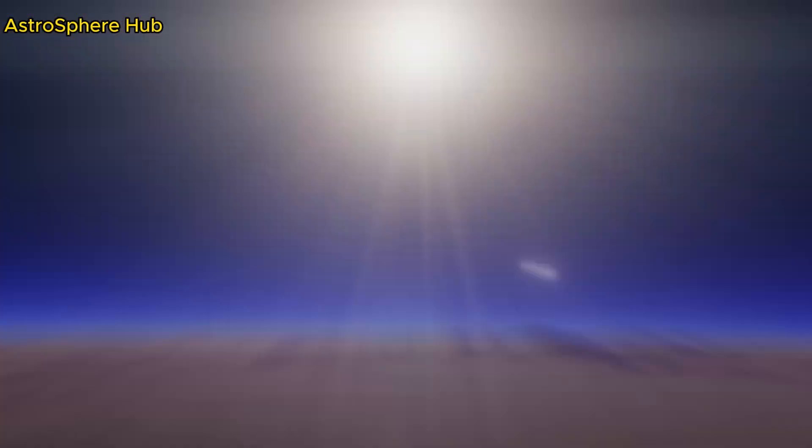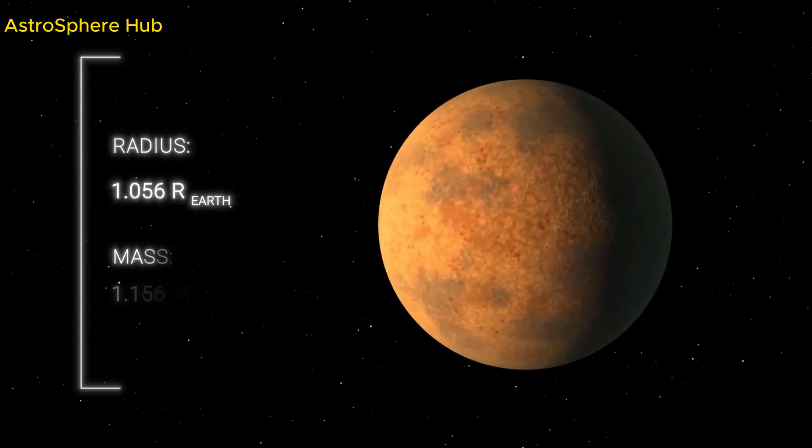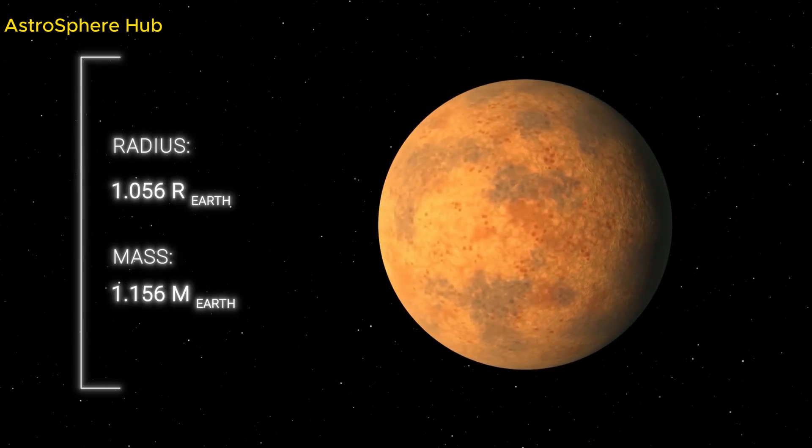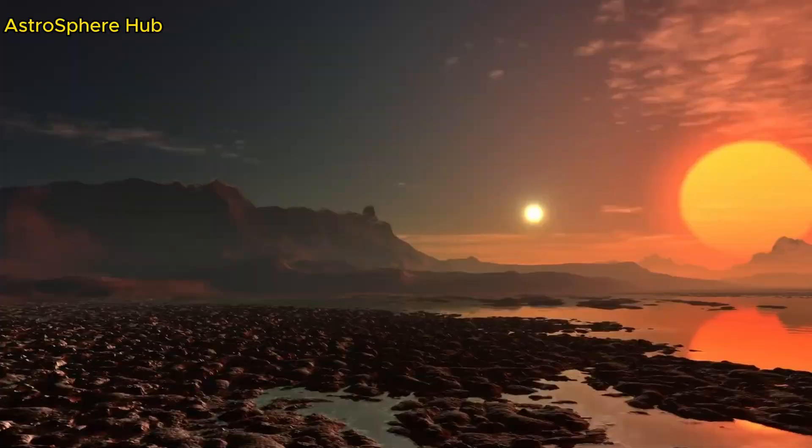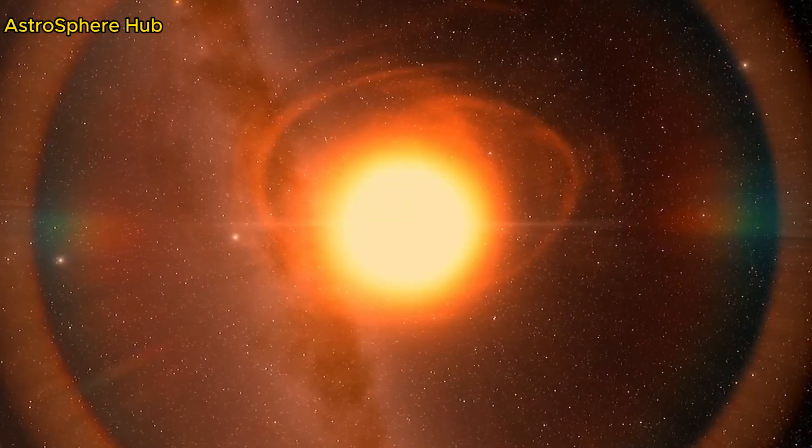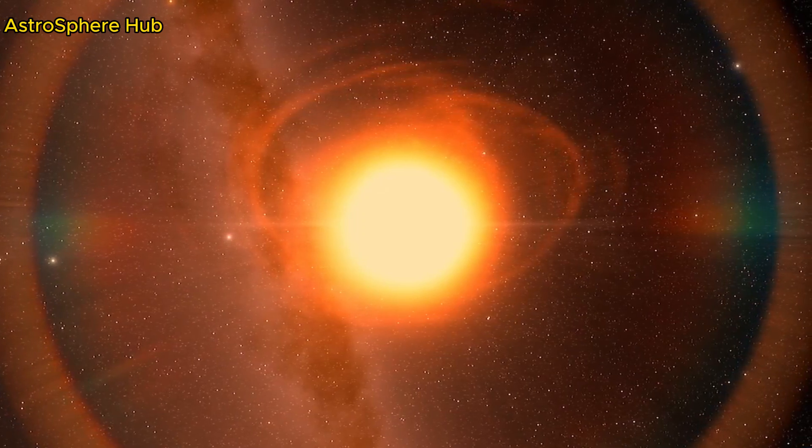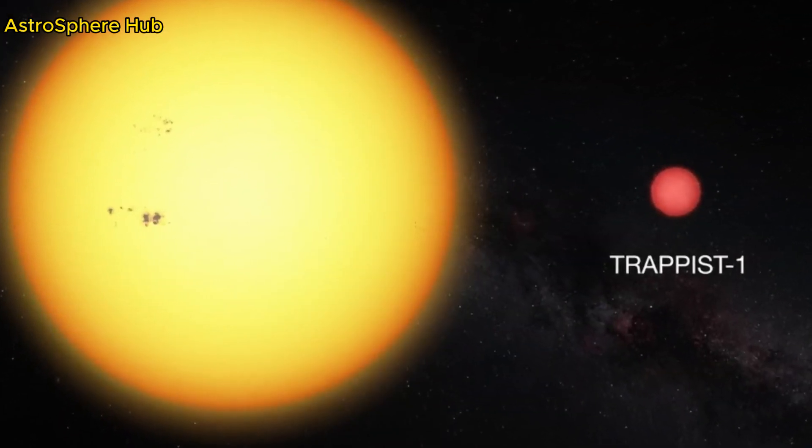Among the planets in the TRAPPIST-1 system, the fourth one, TRAPPIST-1e, is the most promising. It's both dense and possibly quite rocky, sharing similarities with our home planet, even in composition.